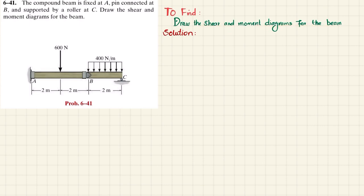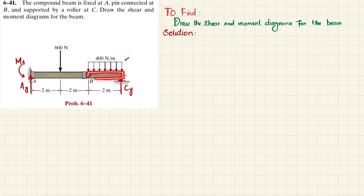Let's start with the solution. For this compound beam, we have to find the reaction forces at point C. If you remove the support at C, there will be a reaction force CY. If you remove the support at A, there will be a reaction force AY and a moment MA. Since this is a compound beam, we will pin out this portion and draw the free body diagram of this beam.